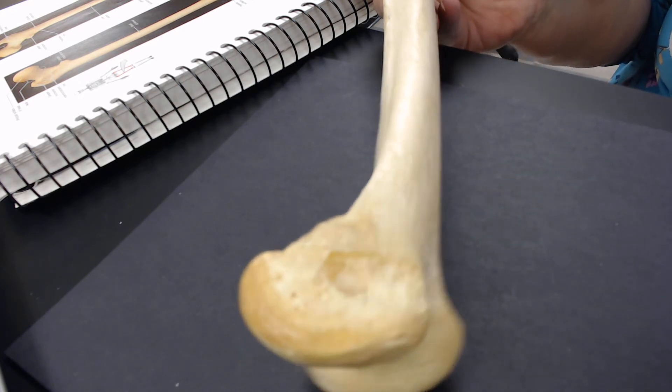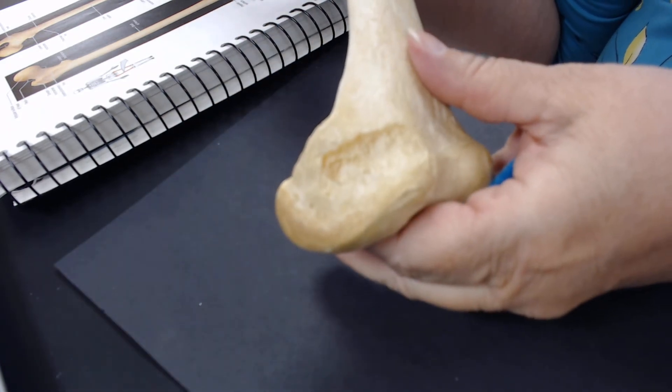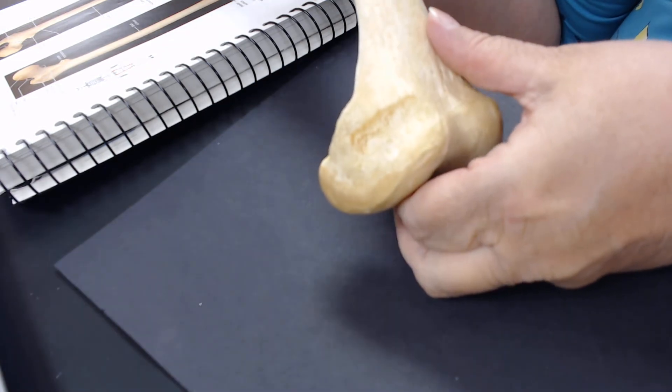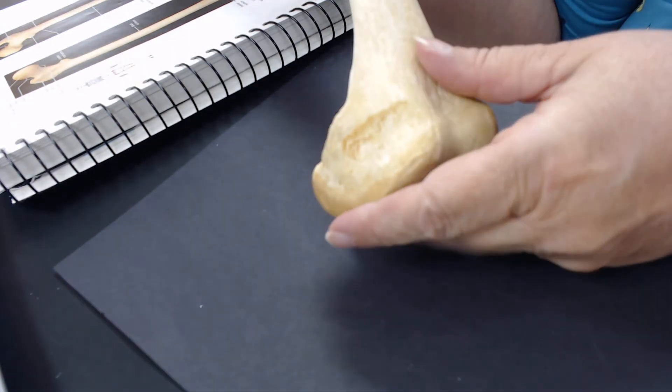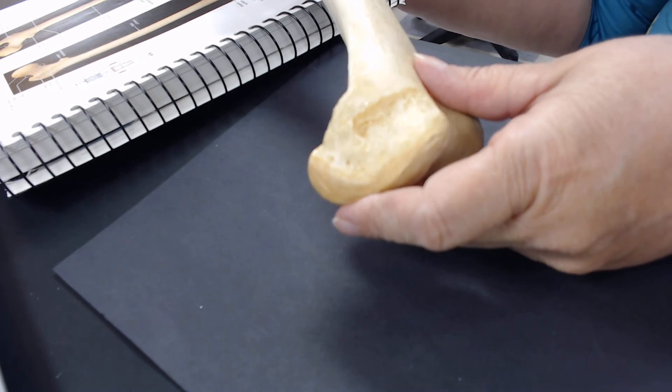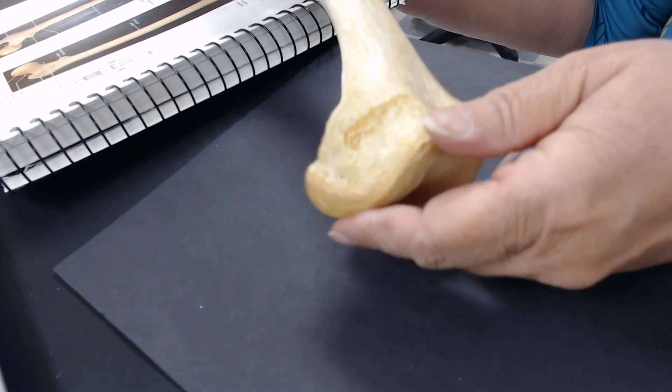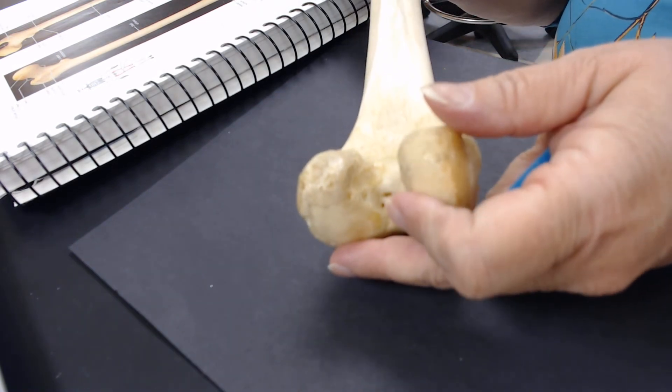There's some more damaged area. This is spongy bone that we can see. There's some damage to that surface and we can see the spongy bone underneath. What else do we see on the back here?